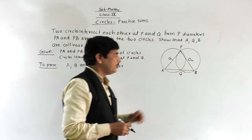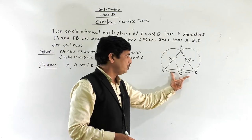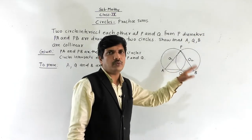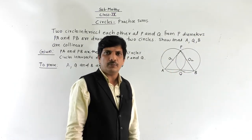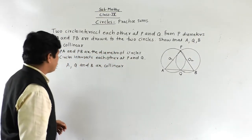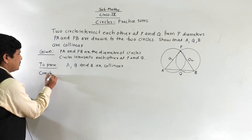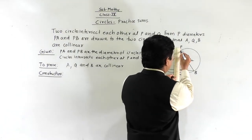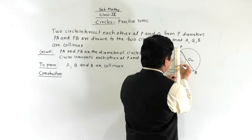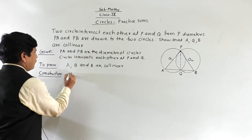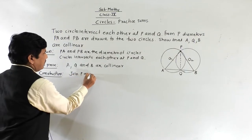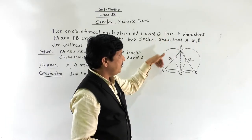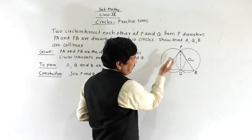For that we need some construction. We join point P with point Q. Now, observe triangle PAQ. PA is the diameter, so the circle is divided into two semicircles. Angle PQA lies in the semicircle.